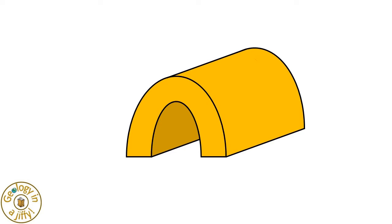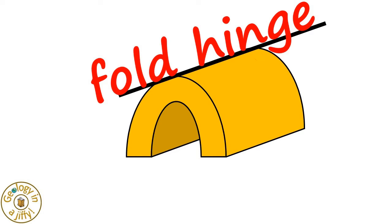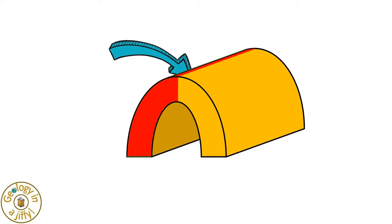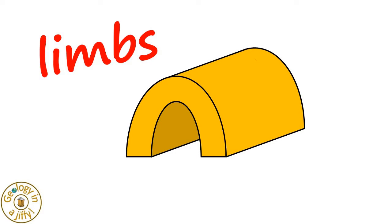Where the axial plane meets the hinge of the fold is called the fold hinge. As the layer of rock bends away from the fold hinge, the areas either side of the hinge — looking like arms or legs here and here — are called limbs.